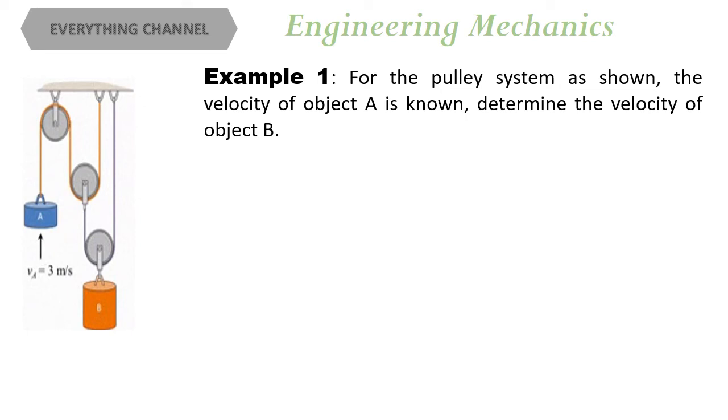Unlike the previous example, for this example, we can see that there are two ropes involved, shown with different colors. Therefore, the dependent condition that we are going to write later involves the total length of rope 1 and the total length of rope 2. So, let's follow our strategy to solve this problem.